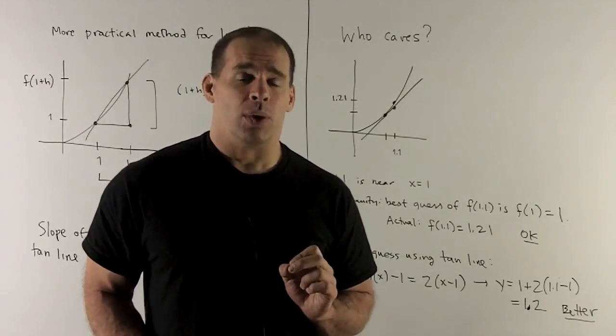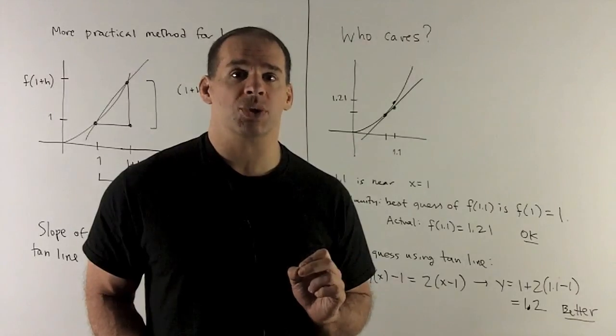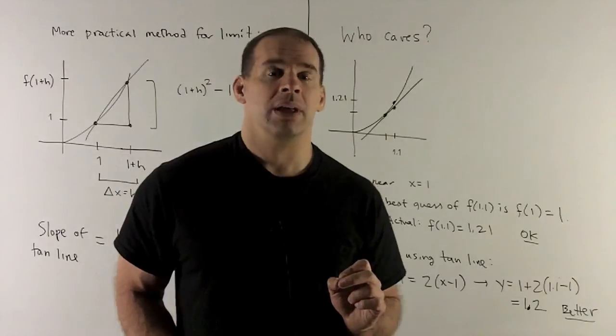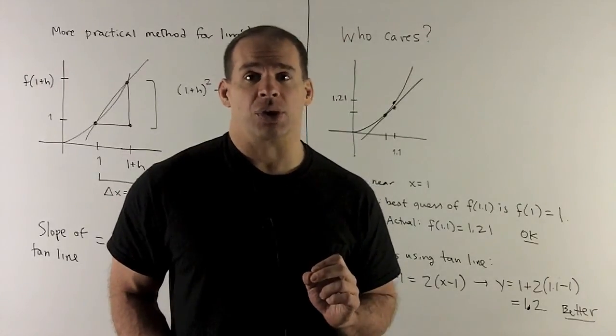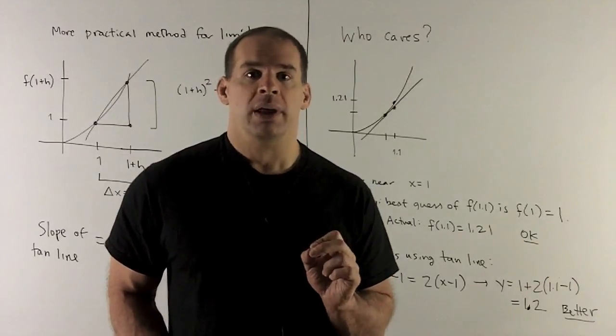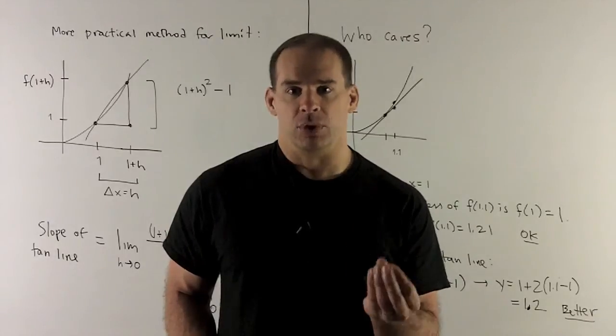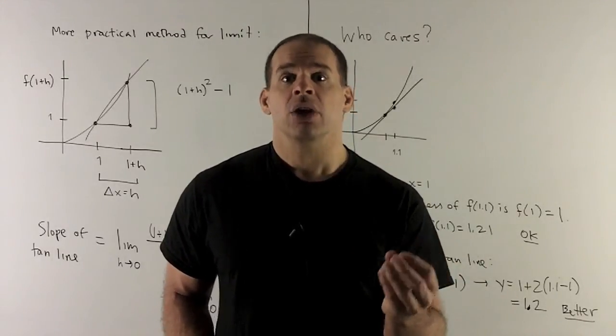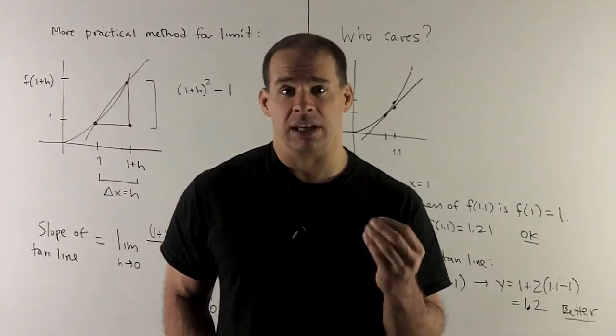I want to approximate what's happening at x equal to 1.1. So I put that in there, and what do I get? I get a 1.2. That's really close to our actual answer of 1.21. So we see that this business of using the tangent line, continuity gets you a decent guess. Using the tangent line gets us an even better guess.